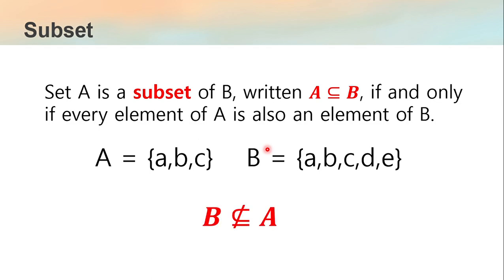However, we cannot say that B is a subset of A, because by definition, all elements of B must be in A. But obviously that's not the case — D and E are in B but not in A. Therefore, B is not a subset of A, but A is a subset of B.